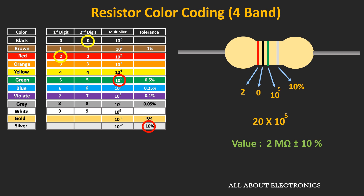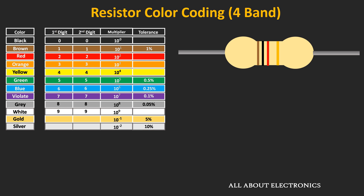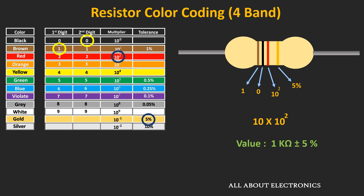Let us take one more example. The first two color bands of this resistor are brown and black respectively. Brown represents the value of 1, and black represents 0. The third band is red, giving a multiplying factor of 10 to the power 2. The fourth tolerance band is gold, representing 5% tolerance. Combining all four values, the resistor value is 10 × 10² = 1 kΩ ± 5%.